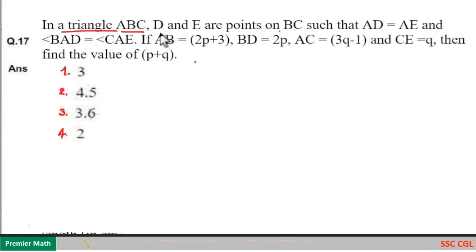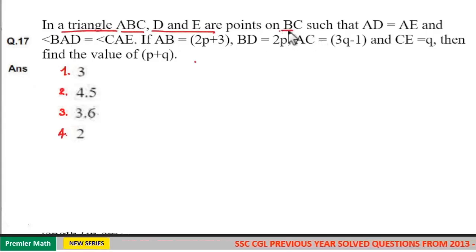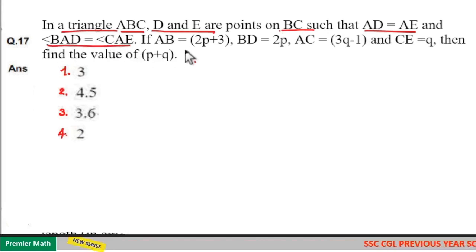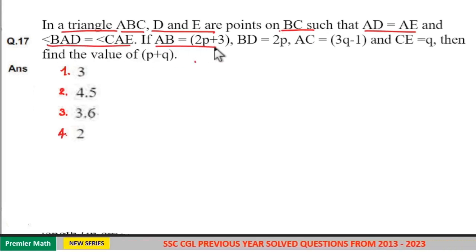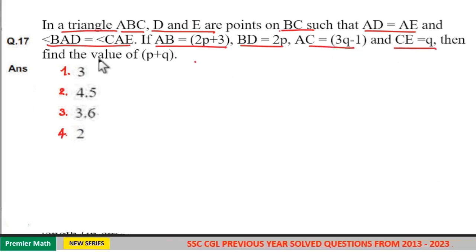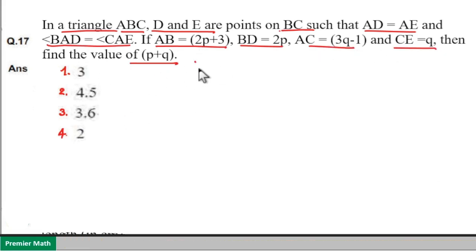In a triangle ABC, D and E are points on BC such that AD equals AE, angle BAD equals angle CAE, AB equals 2P plus 3, BD equals 2P, AC equals 3Q minus 1, and CE equals Q. Find the value of P plus Q.